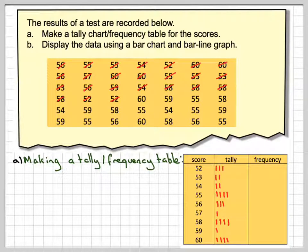Now when we get to 60, which is the next one, we will be putting the line that way because it's easier then to add up groups of five. 59, 55, 58, 54, 59.